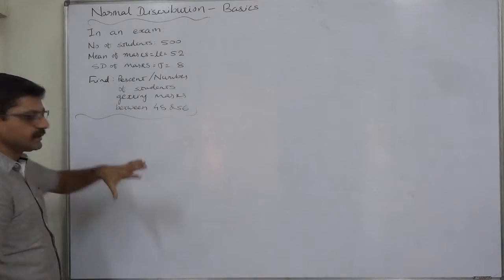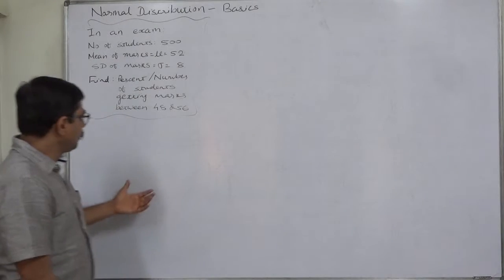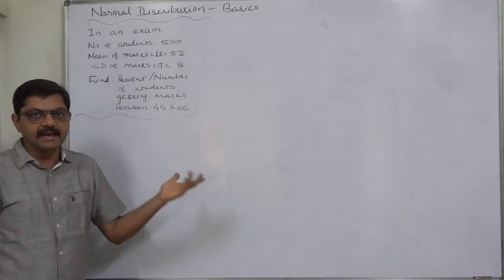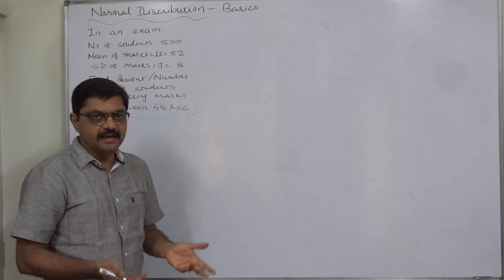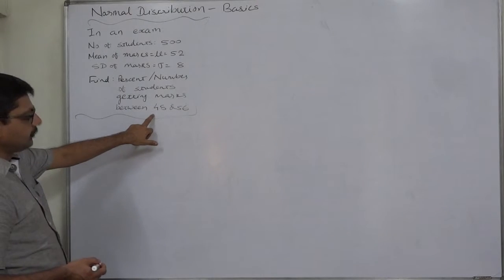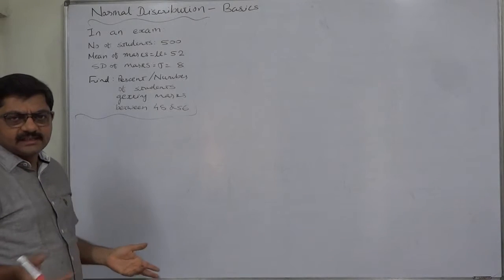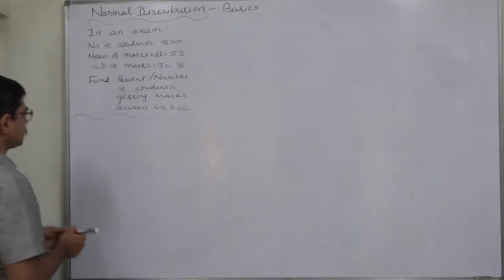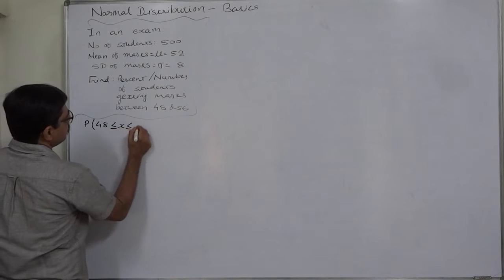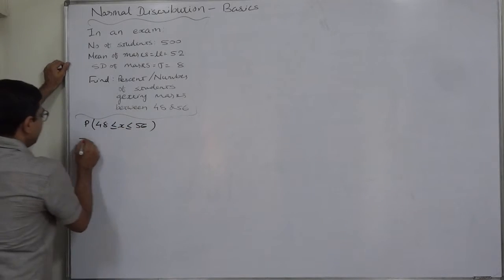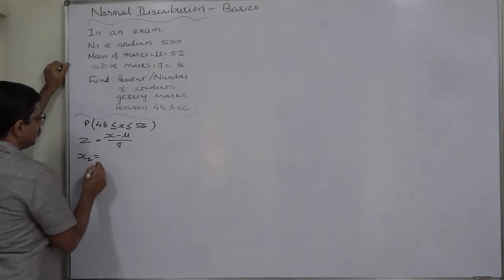We treat this as an inclusive problem because there is no specific information in the question or from the paper sources. So we are going to calculate probability including 48 and 56 — there is no change in the statistical process, this is just for explanation. So: 48 ≤ X ≤ 56. As we know, Z = (X − μ) / σ. Let us take the lower limit of X first.